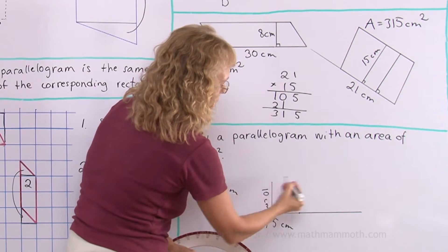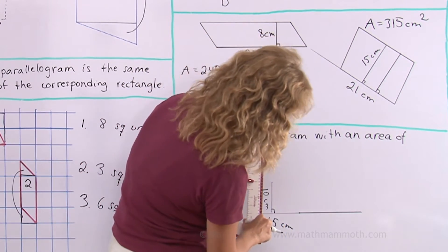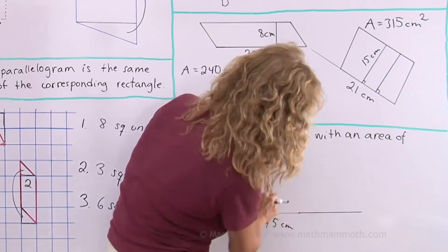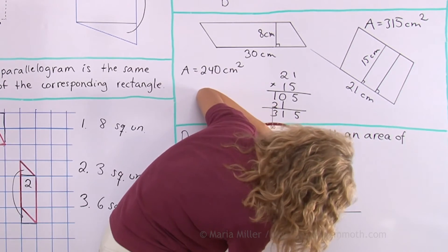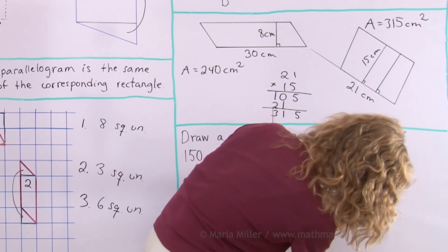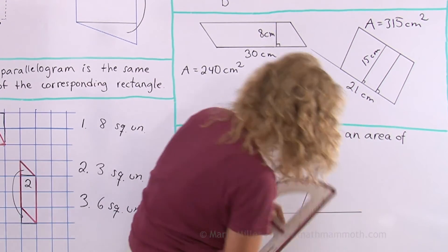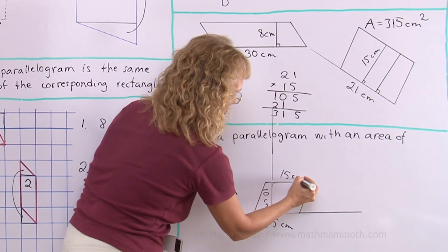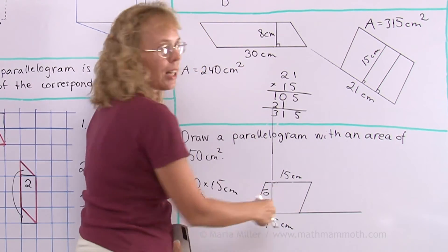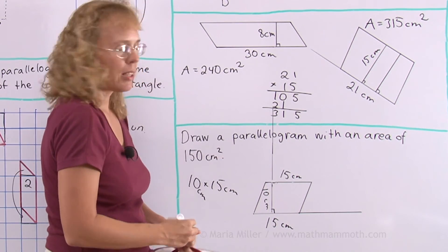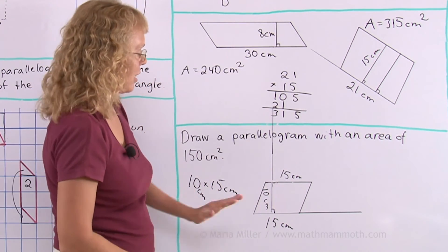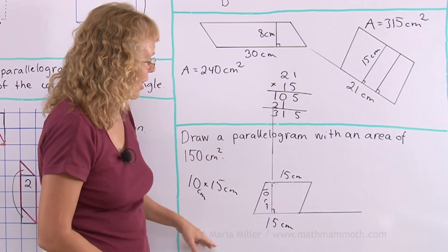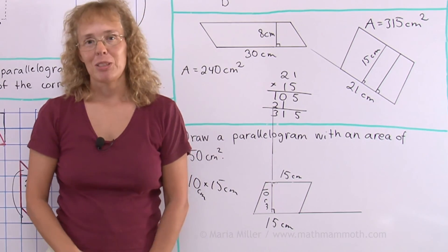This side has to be perpendicular to the height. So in order to draw it more accurately, I need to continue this line. Once I get these two sides of 15, these other two sides I just draw in. So there's one possibility, but there are multitudes more different parallelograms that have the area of 150 square centimeters. I apologize for messing up the drawing some — I hope this was still helpful.